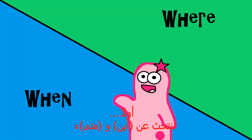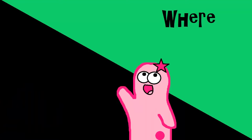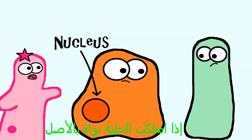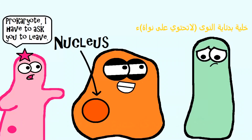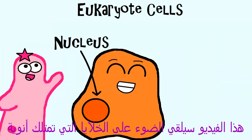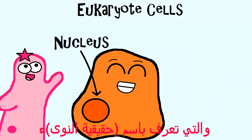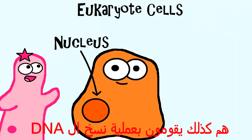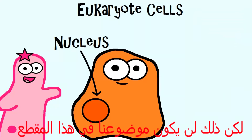First, let's talk about where and when. Where: it occurs in the nucleus — if the cell has a nucleus. Remember, not all cells have a nucleus. This video is going to focus on the types of cells that do have a nucleus. They're known as eukaryote cells. Prokaryotes, which are cells that do not have a nucleus, do things a little differently. They also do DNA replication, but that is not going to be our focus for this clip.